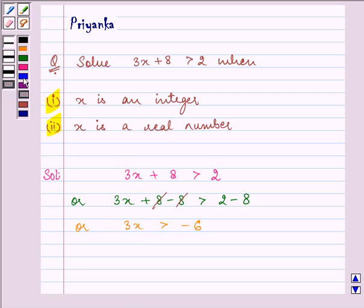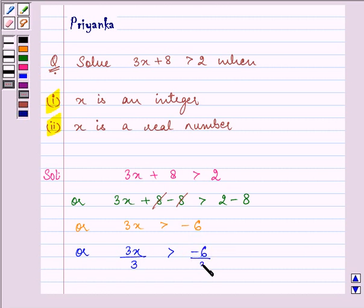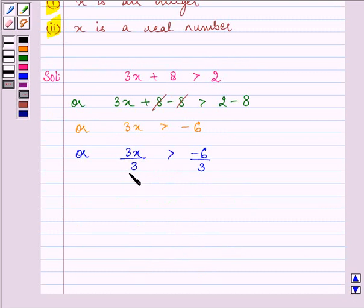Now to find out the value of x let us divide both the sides by 3. On simplifying we are left with the value x is greater than minus 2.